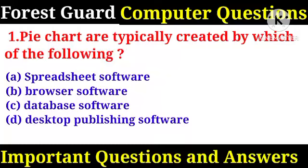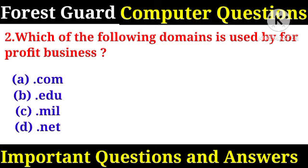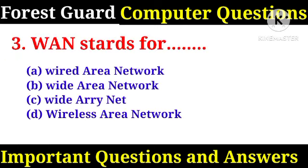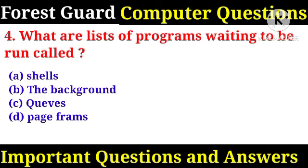Question 1: Pie charts are typically created by which of the following? Right answer: A, a spreadsheet. Which of the following domain is used by for-profit businesses? Right answer: A, dot com. Double A N stands for? Right answer: Wide Area Network.